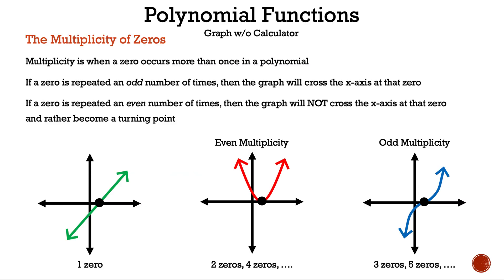Next, we have the multiplicity of zeros. Multiplicity is when a zero occurs more than once in a polynomial. If a zero is repeated an odd number of times, then the graph will cross the x-axis at that zero — it could have one, three, five zeros, and so on. If a zero is repeated an even number of times, then the graph will not cross the x-axis and rather become a turning point — it could have two, four zeros, and so on.